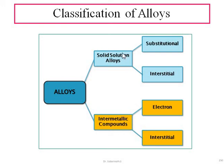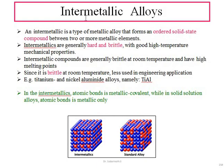Welcome back to the next video of Material Science and Technology, Module 3: Classification of Alloys. In the last video, we saw how solid solution alloys look, which is the primary classification of alloys. In this video, we will see the second classification — intermetallic compounds or intermetallic alloys — which is further classified into electron compounds and interstitial compounds.